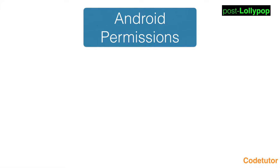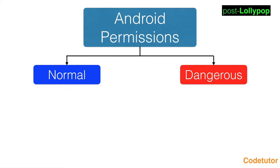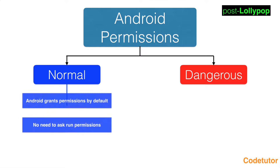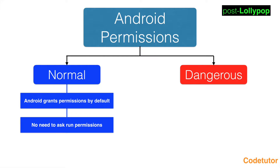Post Lollipop, there have been changes in the permissions. Android categorizes the permissions into two types: Normal Permission and Dangerous Permission. Normal permissions are just the same kind of permissions that you would usually declare in the manifest file. The difference is Android grants these permissions by default — you don't have to ask runtime permissions.